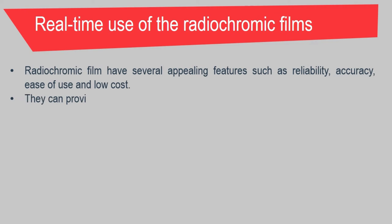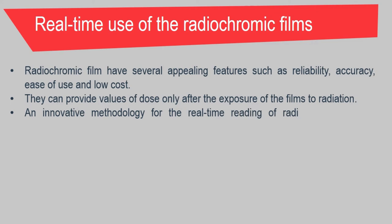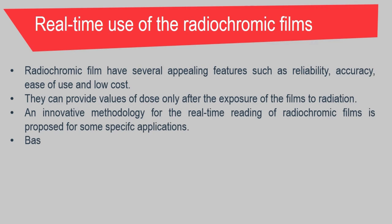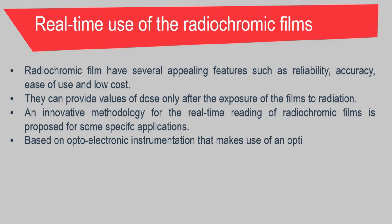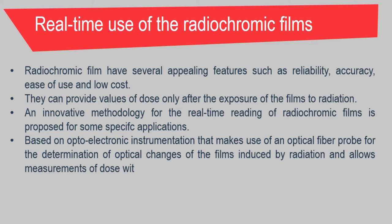The radiochromic film has several appealing features such as reliability, accuracy, ease of use, and low cost. They can provide dose information only after exposure of the film to radiation. However, there is an innovative methodology for the real-time use of radiochromic films proposed for specific applications. This is based on opto-electronic instrumentation that makes use of an optical fiber probe for the determination of optical changes induced by the radiation, and allows the measurement of dose with a high degree of precision and accuracy.